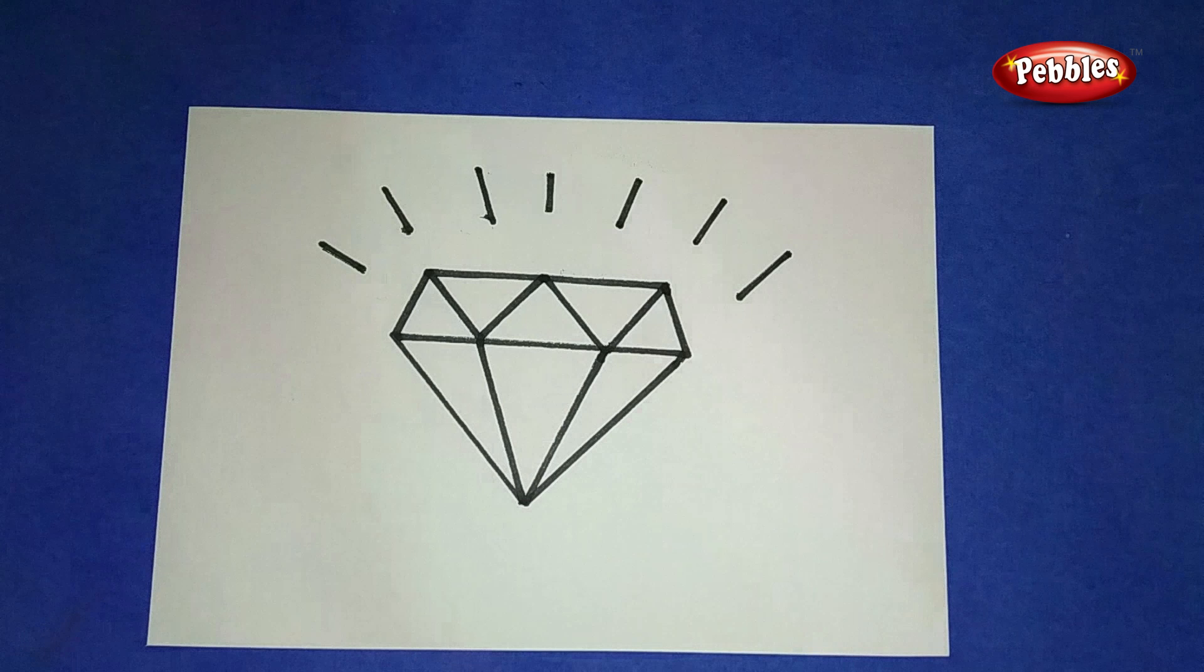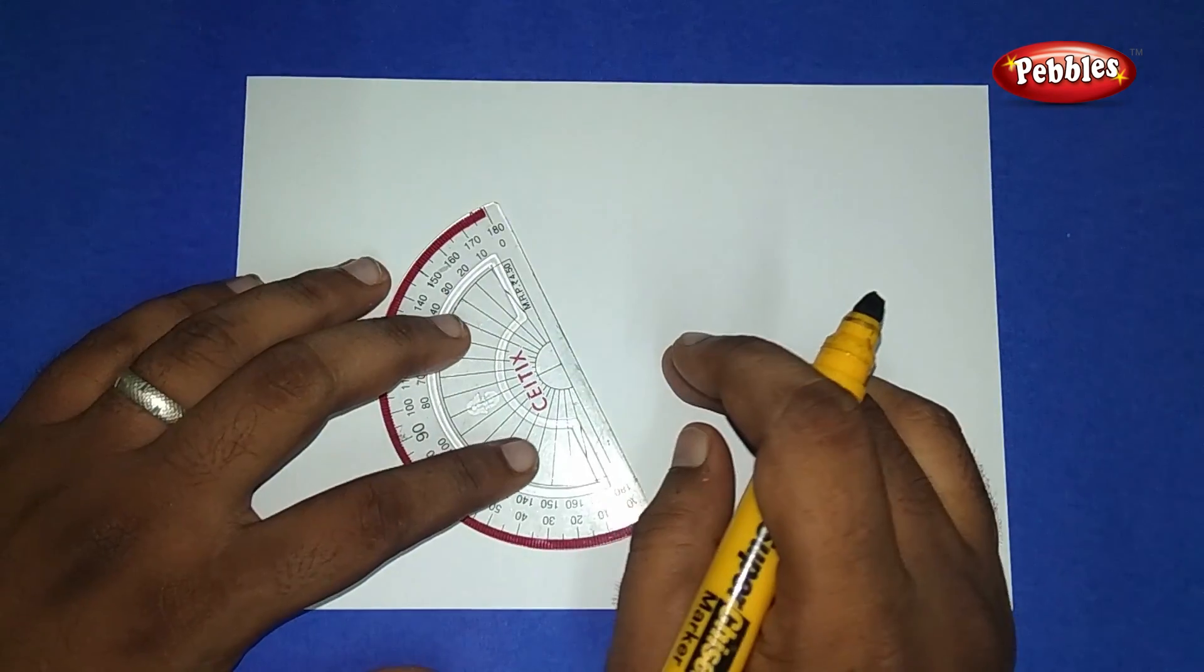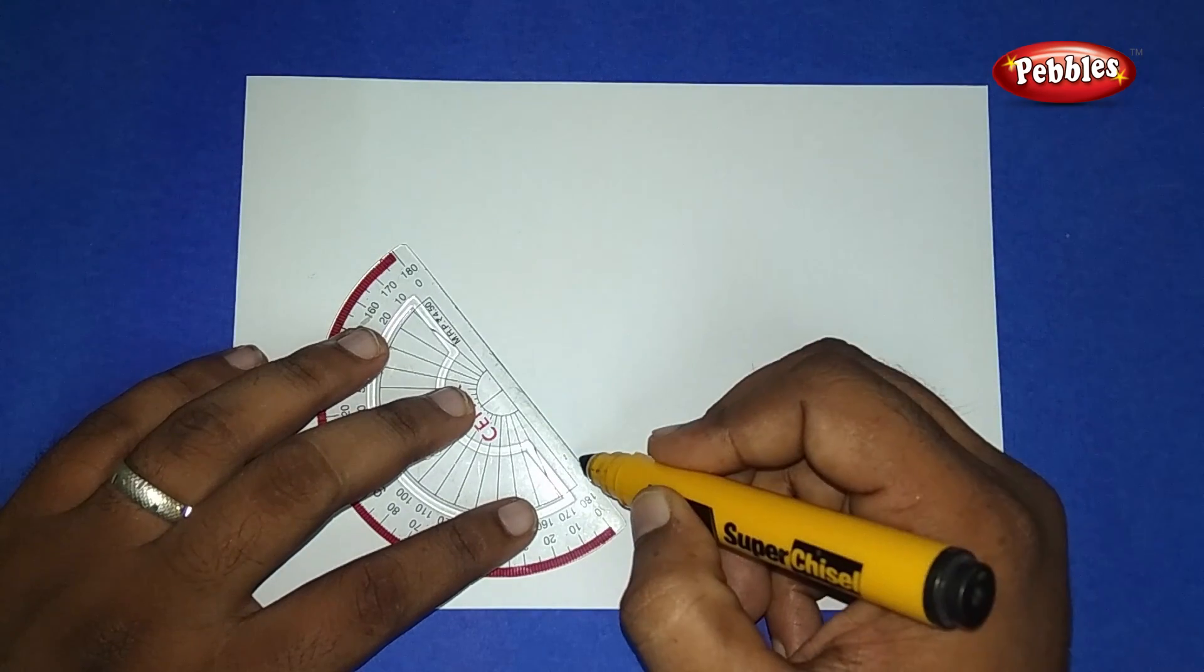Hi children, welcome to Pebbles! Today I'm going to show you how to draw a diamond shape. Let's start. Take a scale and draw a slanting line like this.